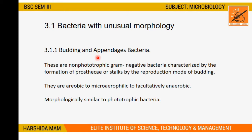These are non-phototrophic gram-negative bacteria. Non-phototrophic means organisms that cannot use direct sunlight to make food, unlike phototrophic organisms. They are gram-negative. Bacteria in this group are characterized by the formation of prosthecae and stalks, and their reproduction mode is budding. Their appendages include prosthecae and stalks.